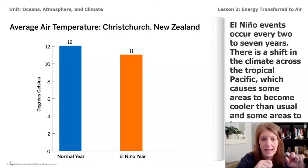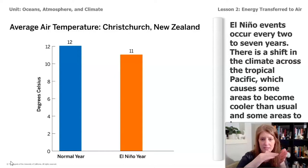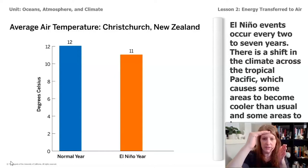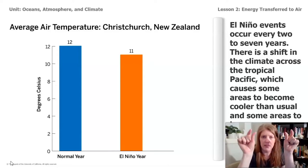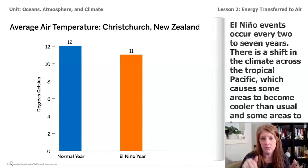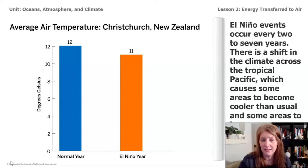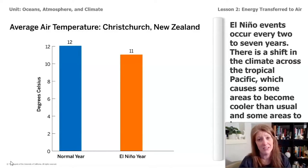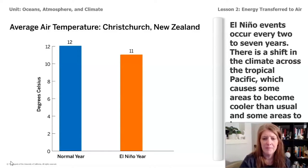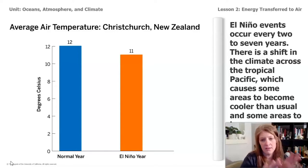Let's pause and take a look at this graph in a little bit of detail. There is a vertical line with data in degrees Celsius, and each one of those little notches is two degrees Celsius. The horizontal line shows labels for the two bars — the blue bar is the normal year, and the orange bar is the El Niño year. I can see pretty clearly that during a normal year the average temperature is 12 degrees Celsius, and during an El Niño year it's only 11 degrees Celsius — which really doesn't seem like very much. That's only one degree Celsius, so I wonder how much that's really affecting everything.